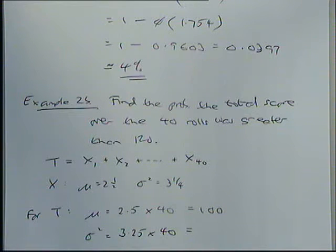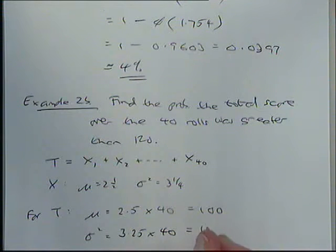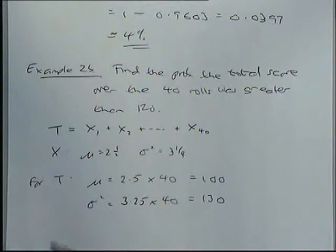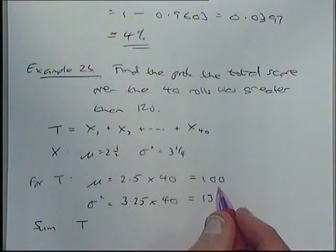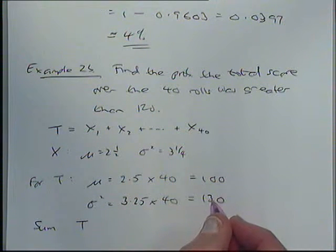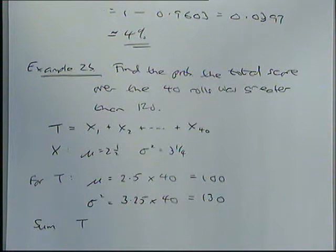If you're adding things up, because there's variation in each one, and you're adding it, the variation gets bigger as well. So that works out, I think, to be 130 I've got down here. So we've got now that the sum, which we're calling T, has a mean of 100 and a variance of 130.